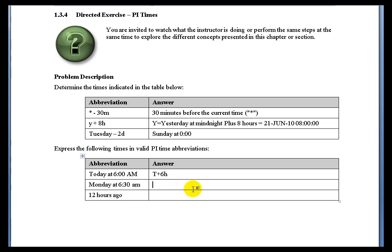Monday at 6:30 AM would be MON plus 6.5 hours. That would be in an abbreviated form.